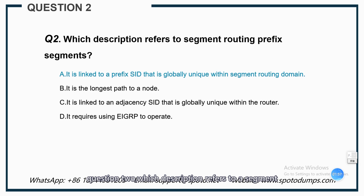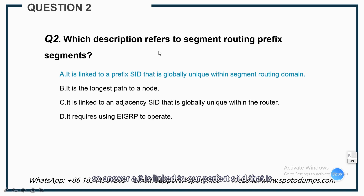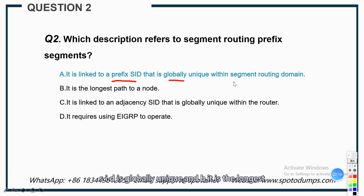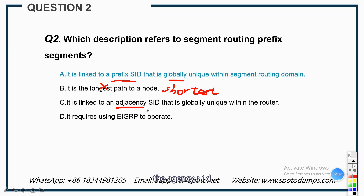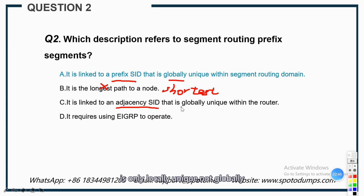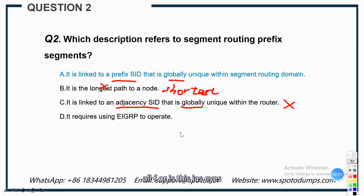Question 2: Which description refers to segment routing prefix segments? Answer A: it is linked to a prefix SID that is globally unique within the segment routing domain — this is correct. Prefix SID is globally unique. Answer B says it is the longest path to the node — it is actually the shortest. Answer C: it is linked to an adjacency SID that is globally unique within the router; adjacency SID is only locally unique, not globally. Answer D requires EIGRP to operate — it should be OSPF or ISIS. So A is the correct answer.